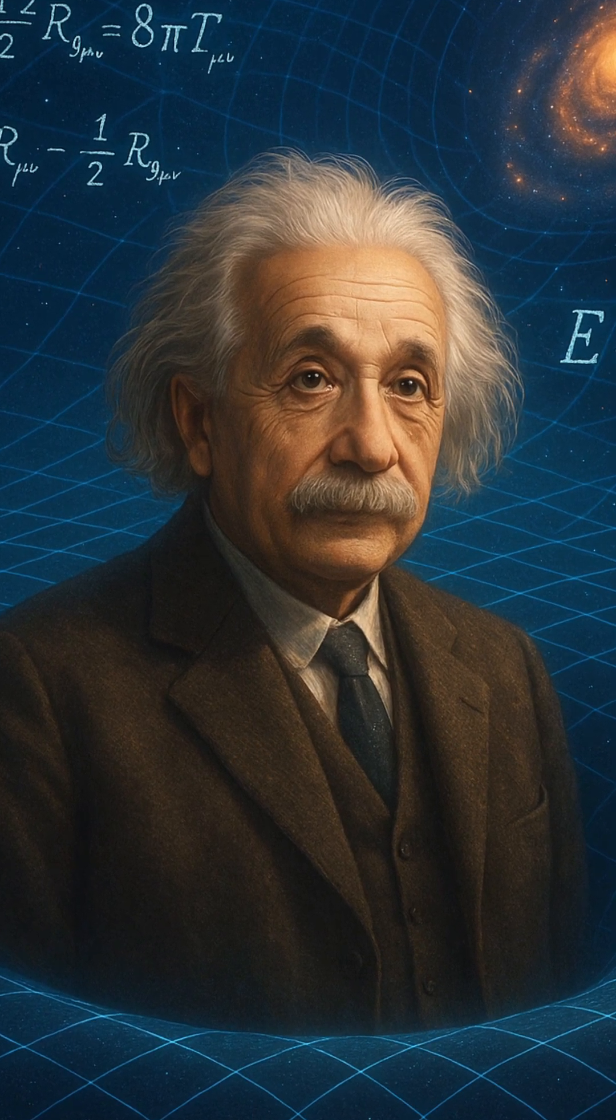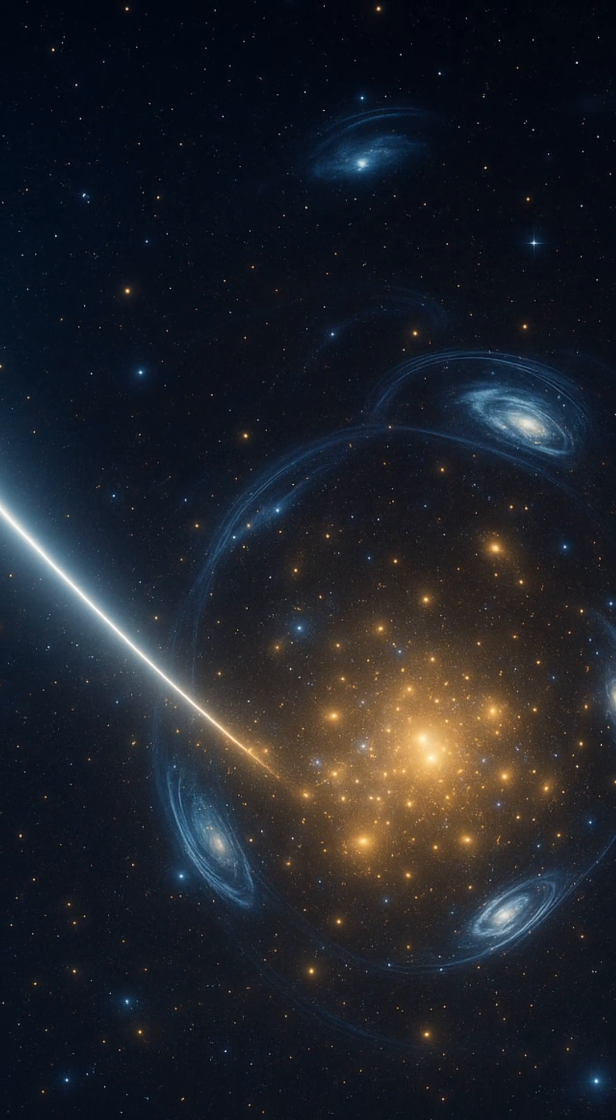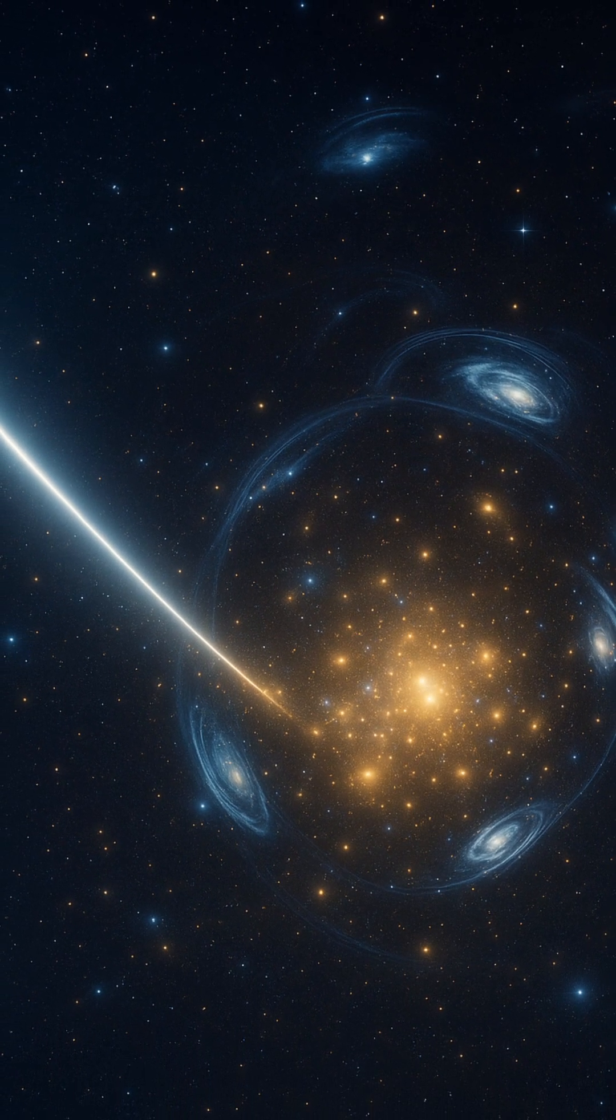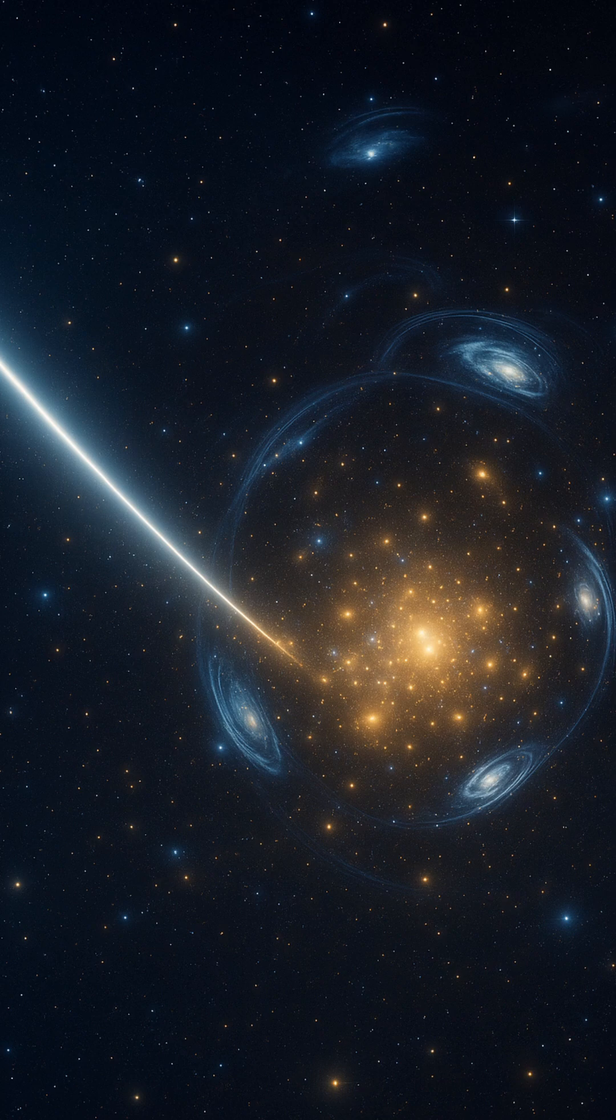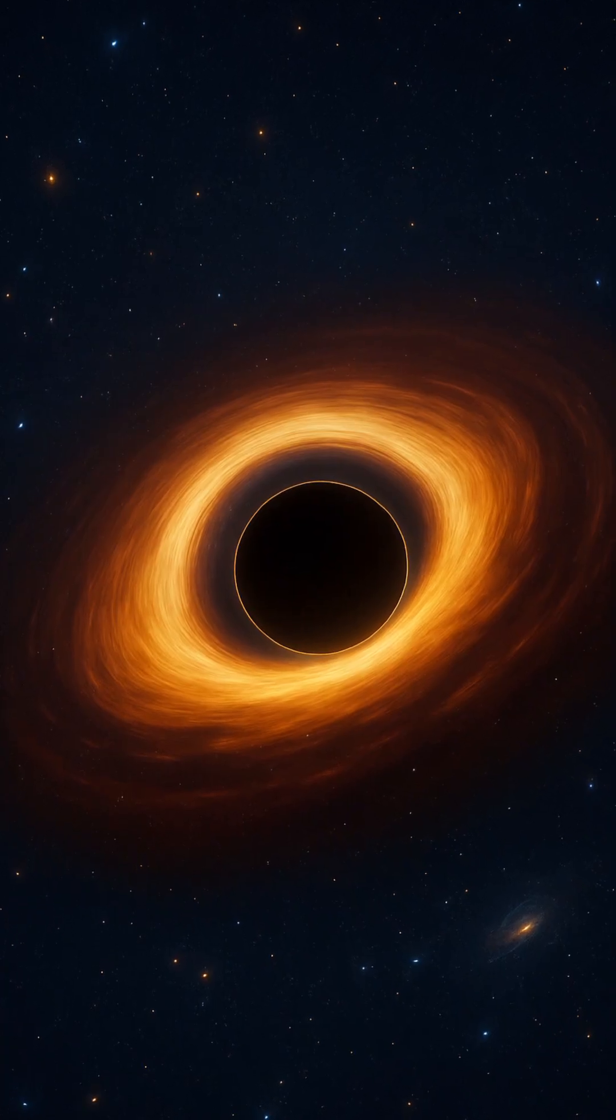And then there's the extreme case. Black holes warping space-time so violently that time itself slows near their event horizons. If you hovered near a black hole, an hour for you might be years for someone far away. Time doesn't just pass. It bends, stretches, and warps depending on your position and velocity.